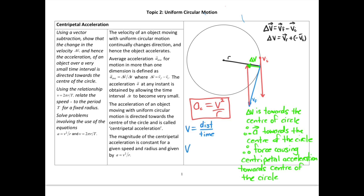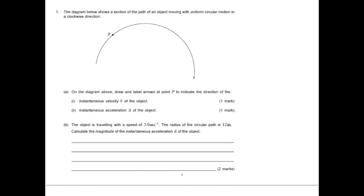When we're talking about something moving in circular motion, the distance is the distance around the edge of a circle, which we call the circumference. The circumference is given by 2πr. When we're talking about something spinning or moving in a circular orbit, the time for one complete orbit we call the period, and we give that the symbol capital T. So the period is the time for one complete revolution, and the distance of one complete revolution is 2πr, which is the circumference of the circle.